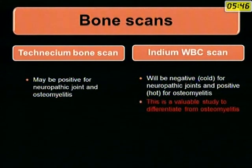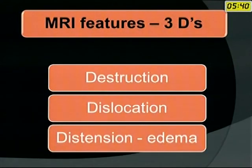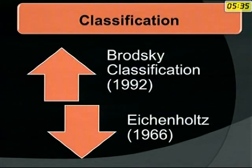Bone scans are more helpful in identifying and differentiating between osteomyelitis and neuropathic joints. MRI shows destruction, dislocation and distension. Biopsy helps in the definitive diagnosis.